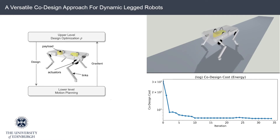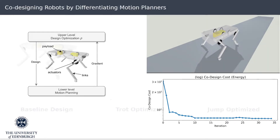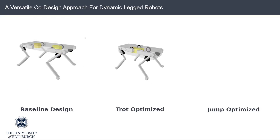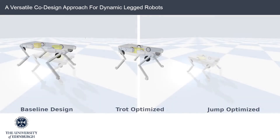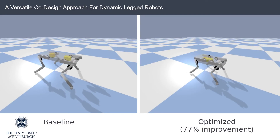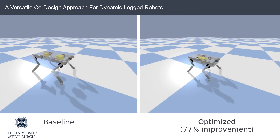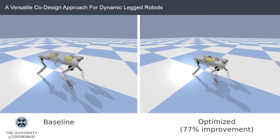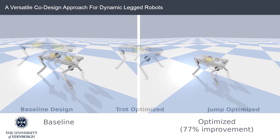Next we show the baseline and optimized designs for trotting and for jumping in simulation. Here we show the baseline design as well as the optimized design for trotting. The design optimized for trotting is heavier with a lower center of mass. Heavier motors are more energy efficient and reduce the overall cost but increase the weight of the robot. Here we show the motions for both designs in simulation. For trotting, our algorithm achieved a 77% cost improvement, and this improvement is also within 1% of what we see in simulation.